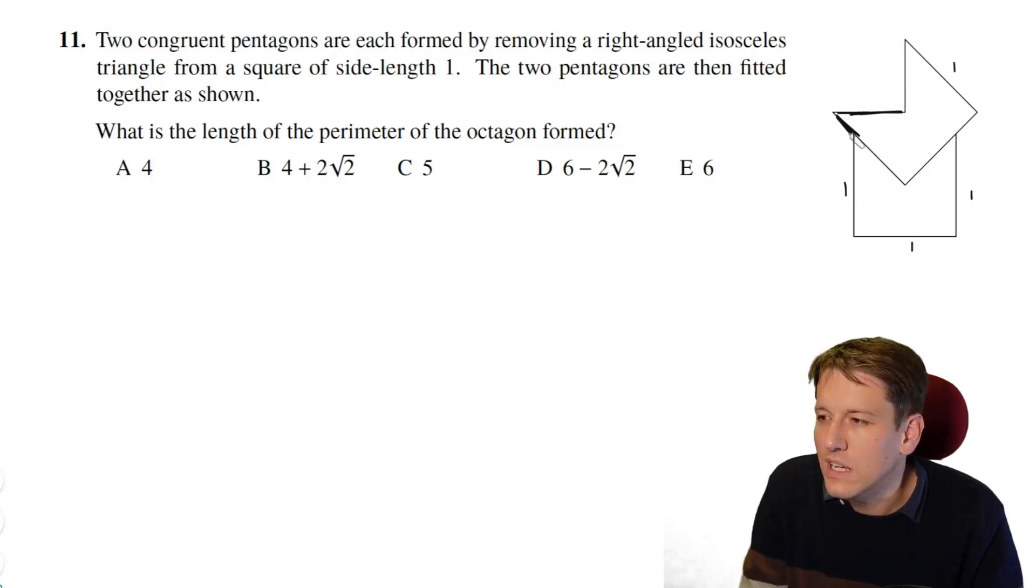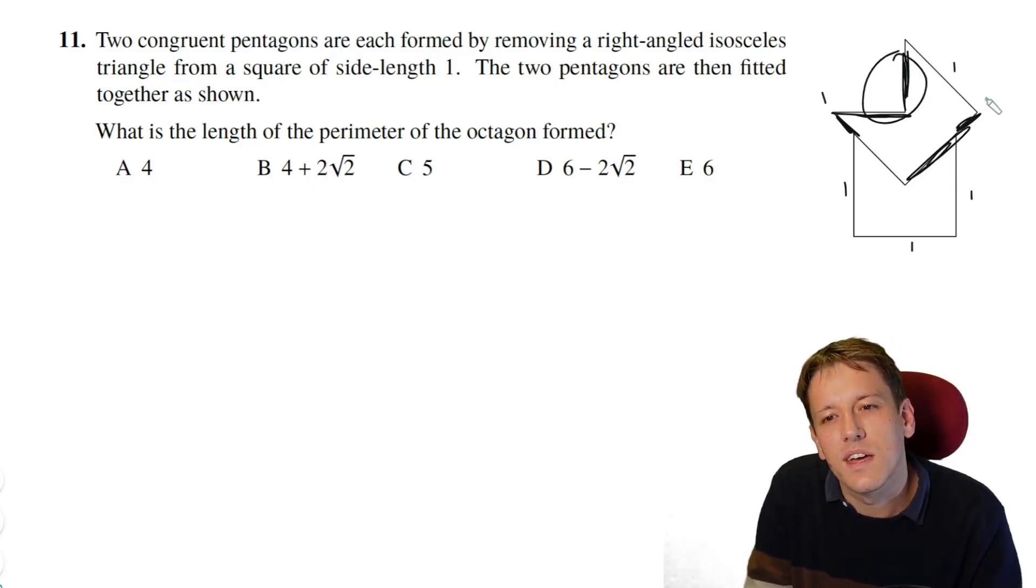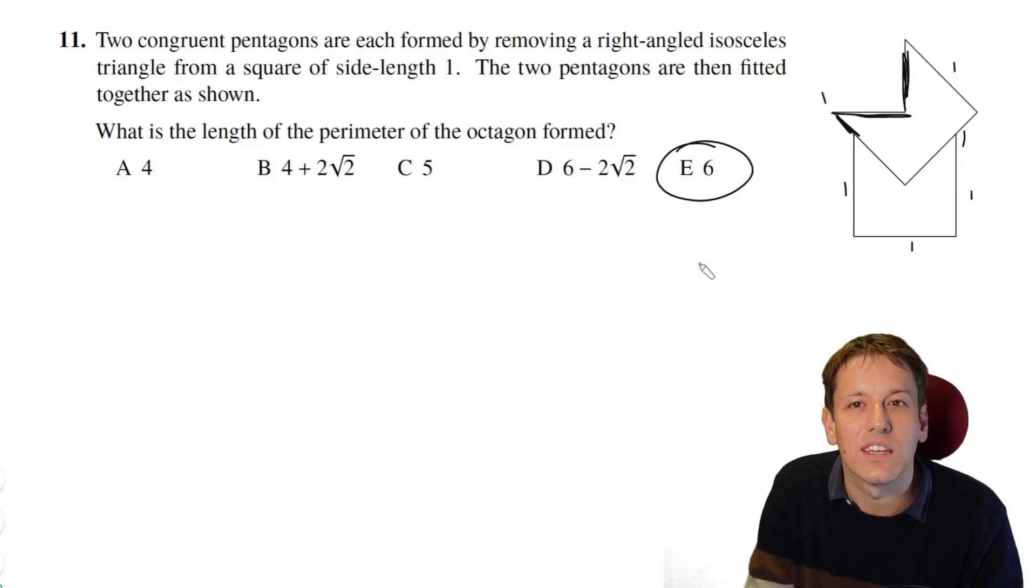So the two things I need to work out are what's this length here, and then this length here. So you could actually work those out directly, or you could just look at these two together and say, well look, this plus this is just the same as this plus this, so those two together actually form one unit. And similarly, this bit and this bit here form one full unit.